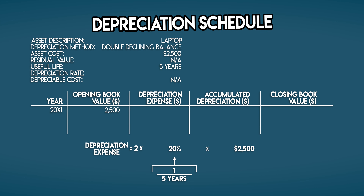Your opening book value is the carrying amount of your laptop at the start of each year. In year 1, it's $2,500 — the same as your asset cost. But be careful because this changes each period. 2 multiplied by 20% is 40%, your double declining balance depreciation rate. 40% of $2,500 gives you $1,000, which is your laptop's depreciation expense.